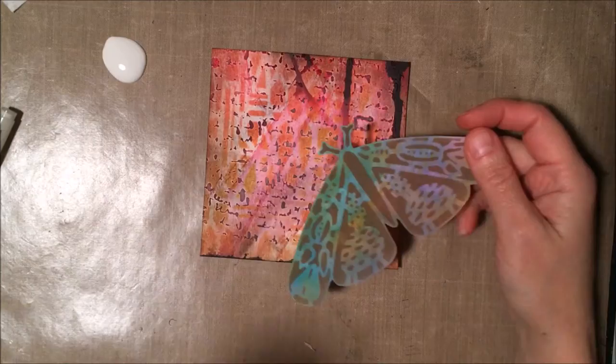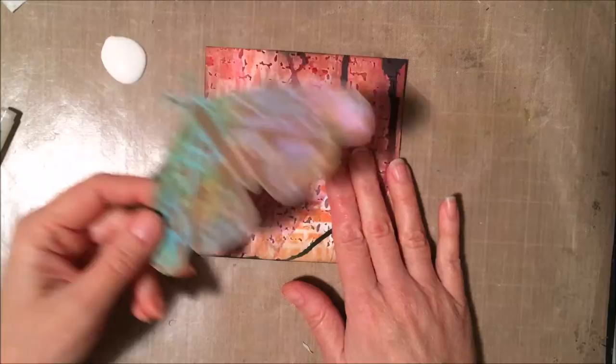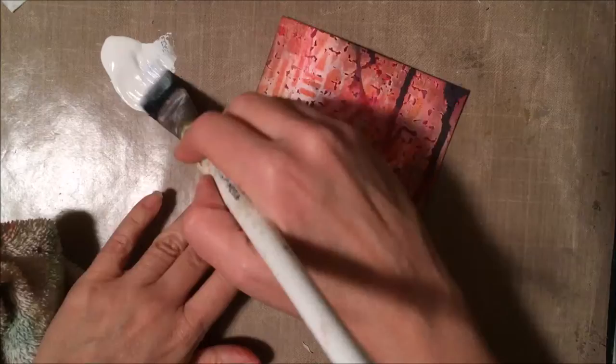So I just used some strong scissors to cut out the butterfly, but now you can see the color mixing there is not so great. So now I got some white gesso and we're going to have a really happy accident.